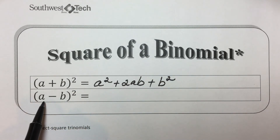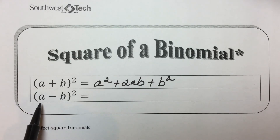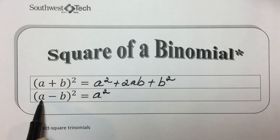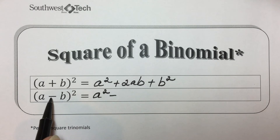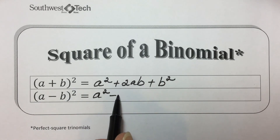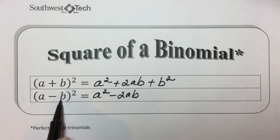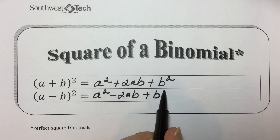Here we have a binomial squared with a minus sign in it, but the procedure is still the same for our shortcut. The result will be the square of the first term, plus twice the product of the two terms. We have a positive a times a negative b, so 2 times that is negative 2ab, plus the square of the last term. Negative b times negative b is a positive b squared.